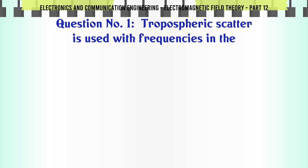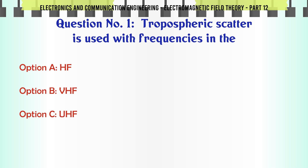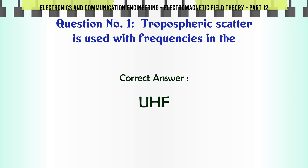Tropospheric scatter is used with frequencies in the: A. HF, B. VHF, C. UHF, D. VLF. The correct answer is UHF.